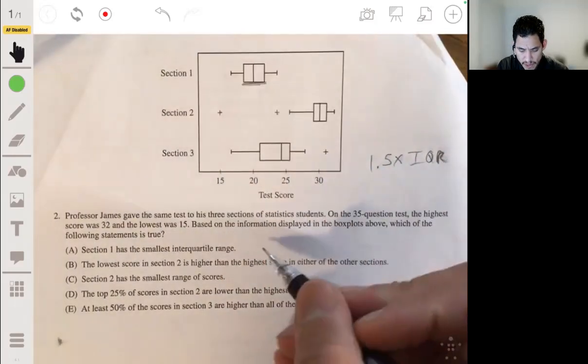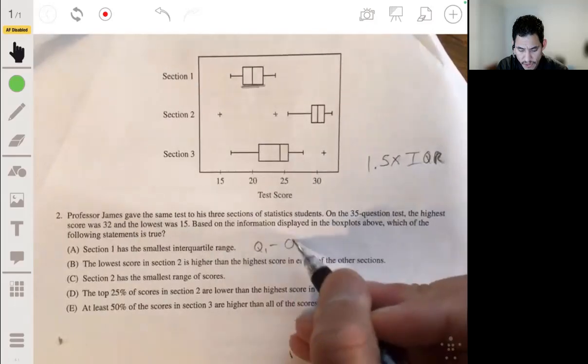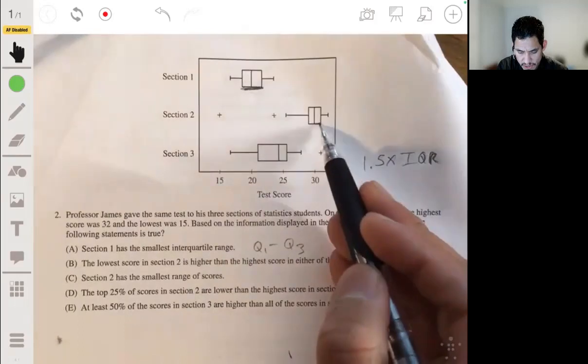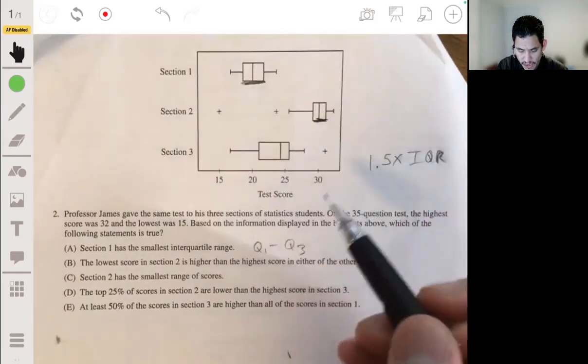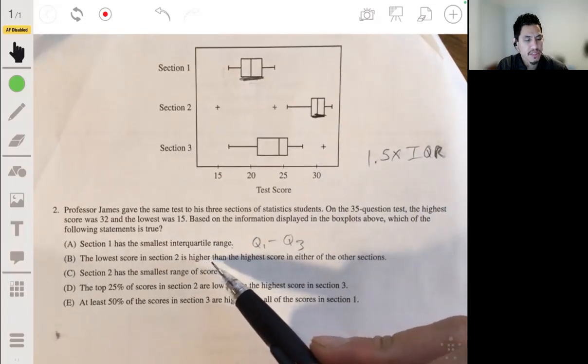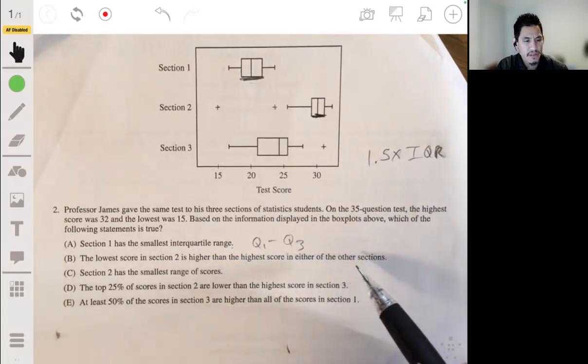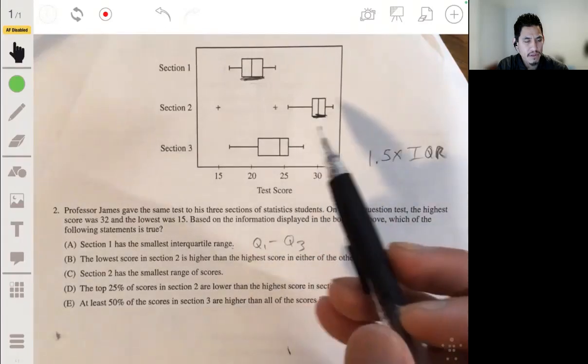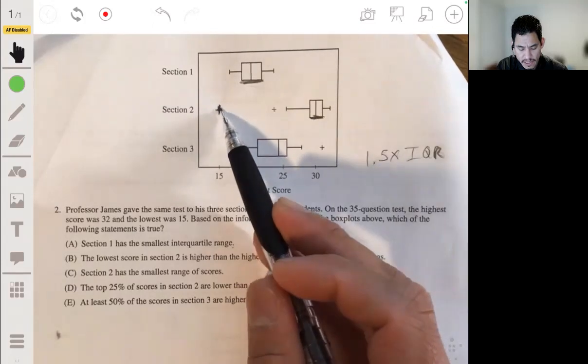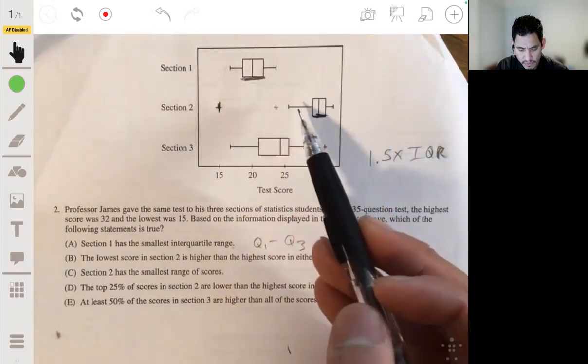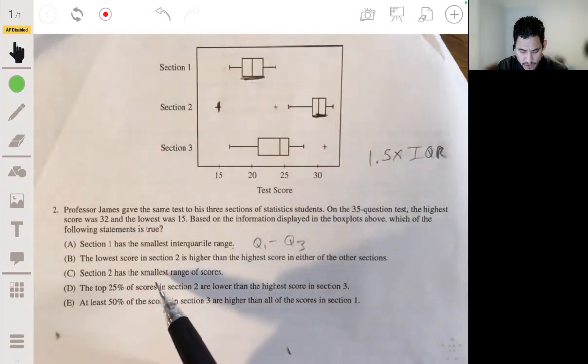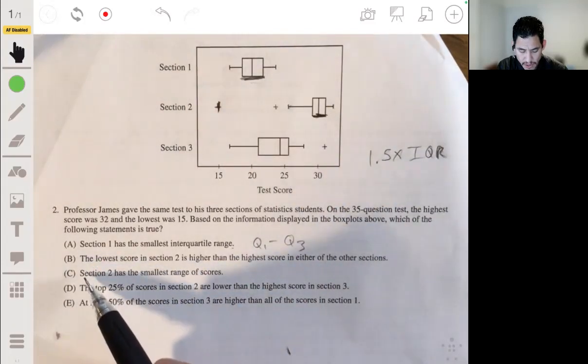Section one has the smallest interquartile range. The interquartile range is, remember, the difference or the distance from Q1 to Q3, or this length here. It's not going to be section one because this one, section two has the smallest IQR. So not A. The lowest score in section two is higher than the highest score in either of the other sections. The lowest score in section two is over here and it's not. That's not going to be correct.